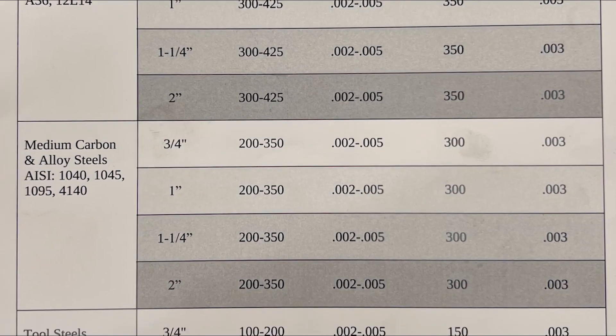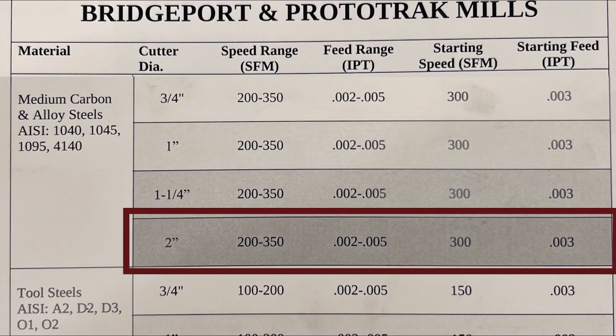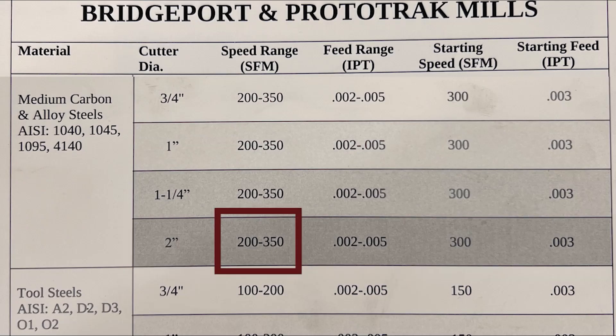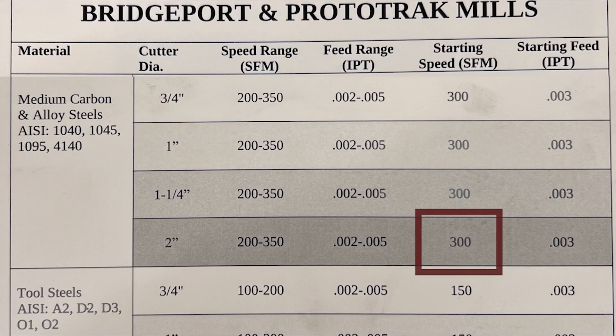For our example, we're using a 2-inch SECO face mill to cut 1040 carbon steel. The chart shows a range of 200 to 350 SFPM for this tool in 1040 carbon steel, and lists a starting point of 300 SFPM for this application.